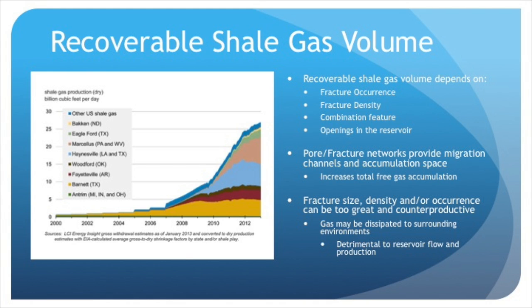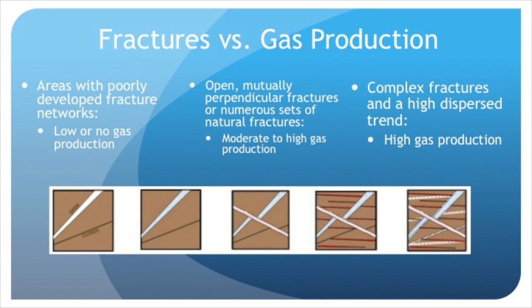Natural fracture networks provide migration channels and accumulation space for natural gas and formation water, increasing the total free gas accumulation in the shale. When fracture size, density, and/or occurrence is too great, gas may be dissipated to certain environments and can ultimately be counterproductive to reservoir flow and production. More fractures in a high dispersed trend correspond to higher gas production. Open, mutually perpendicular natural fractures or numerous sets of natural fractures will increase shale gas production, while areas with poorly developed fracture networks have low or no gas production.